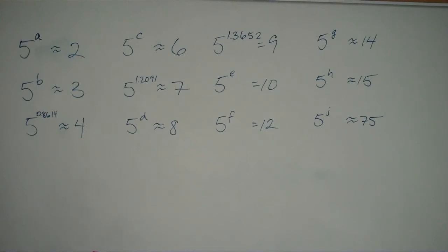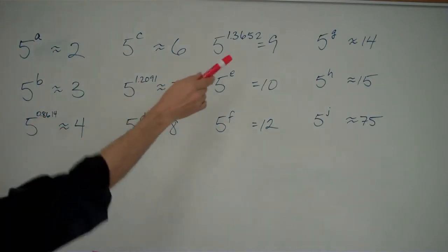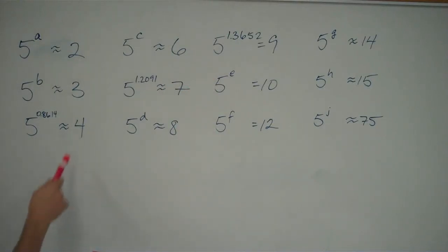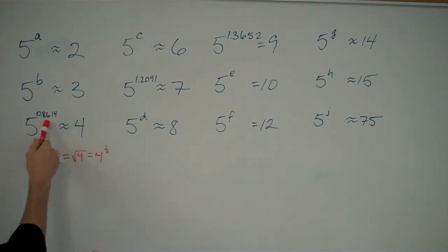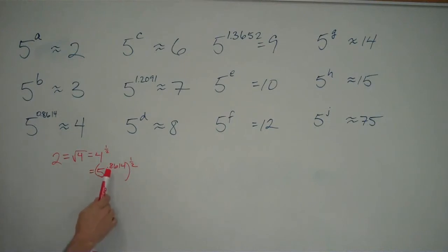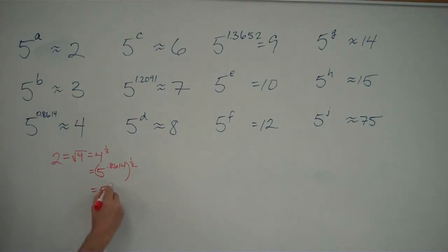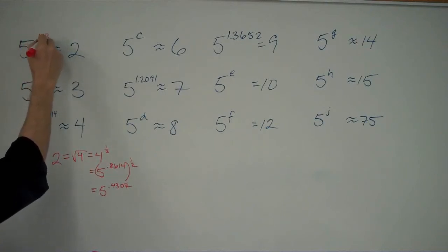Let's see what we can do. First off, we want to know: 5 to what power is 2? Well, we know 5 to a certain power is 4. Really what's going to help us is the 4, because 2 is the square root of 4 — that just means 4 to the 1/2 power. I know 4 is 5 to the 0.8614, so I'm taking that to the 1/2 power. When I have a number to a power to another power, I multiply the exponents. So that means this is 5 to the 0.4307. The answer for A is 0.4307.